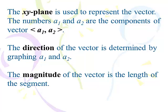The numbers a1 and a2 are the components of the vector. So for a vector (3, 2), 3 is your a1 and 2 is your a2. The direction will be determined by graphing it on the Cartesian plane, and the magnitude will be determined by its length using the Pythagorean theorem. For direction, we're going to use the tangent function, y over x.